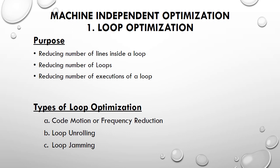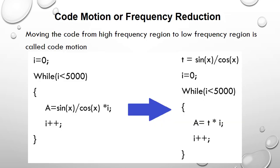There are three types of loop optimization: frequency reduction (code motion), loop unrolling, and loop jamming. Code motion is about moving code from a high-frequency zone (inside a loop) to a low-frequency zone (outside the loop). For example, consider: i = 0; while (i < 5000) { a = sin(x) / cos(x) * i; i++; }. The only variable changing here is i, so sin(x) / cos(x) is unnecessarily computed at every loop execution even though x remains constant.